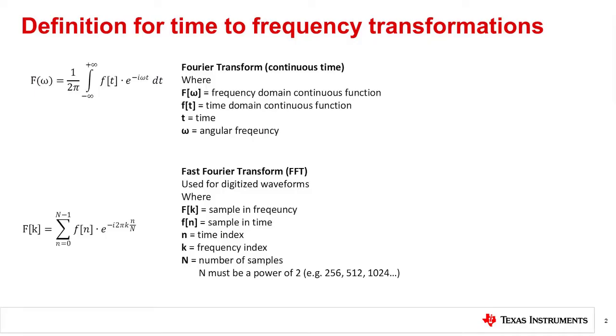Here we show the mathematical relationship for the Fourier Transform and the Fast Fourier Transform. The Fourier Transform is a general method for taking a time domain equation and converting it to a frequency domain equation.